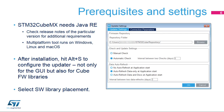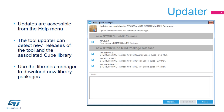Download the STM32CubeMX installer for free from the ST website and install it. Then, set your preferences in the settings menu: one menu for the updater and library download by pressing Alt-S, and the other for code generation and integration with development toolchains by pressing Alt-P. Once this setup is completed, a new project can be created. If the Internet connection is configured correctly, the tool can update itself as well as the code libraries used for generating the project workspaces.